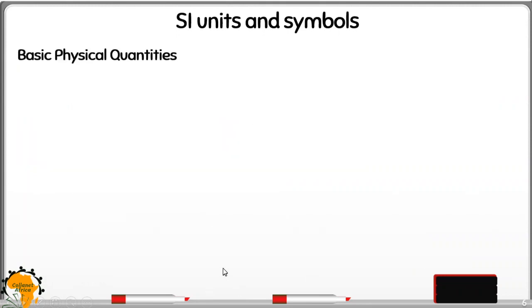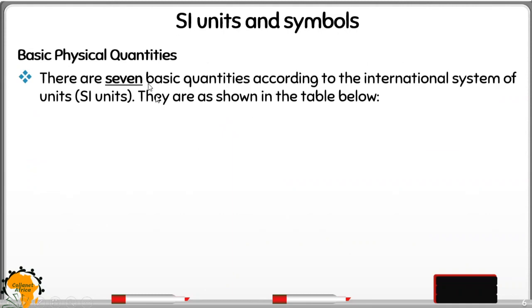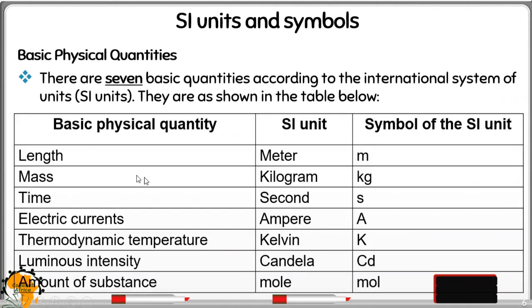There are seven basic quantities according to the international system of units. They are shown in the table below. The first column gives us the basic physical quantity, the second column gives us the SI unit, and then we have the symbol of the SI unit.